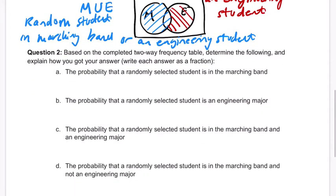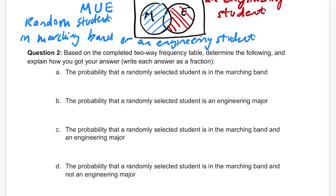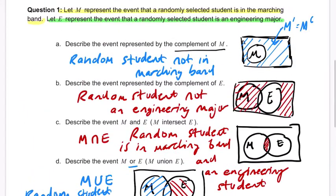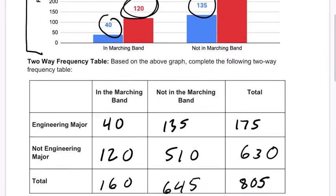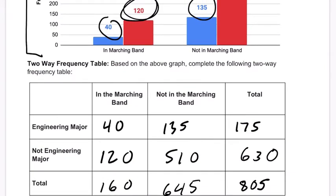Question two: based on the uncompleted two-way frequency table, determine the following and explain how you got your answer. This goes back to our previous video. I'm referencing my notes — I'll scroll up and show you the table that we made. We want to know a couple of probabilities.